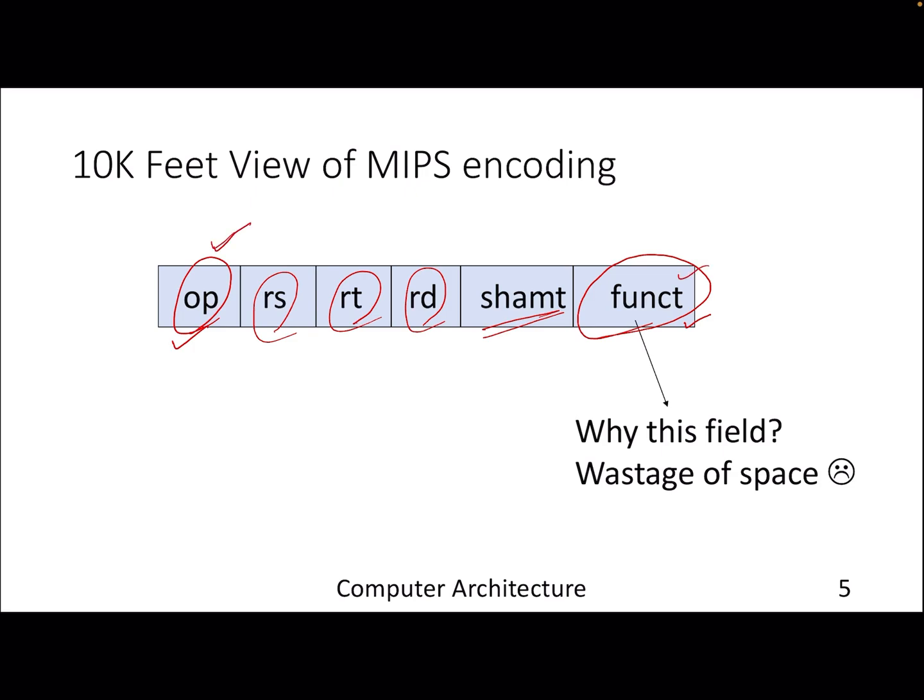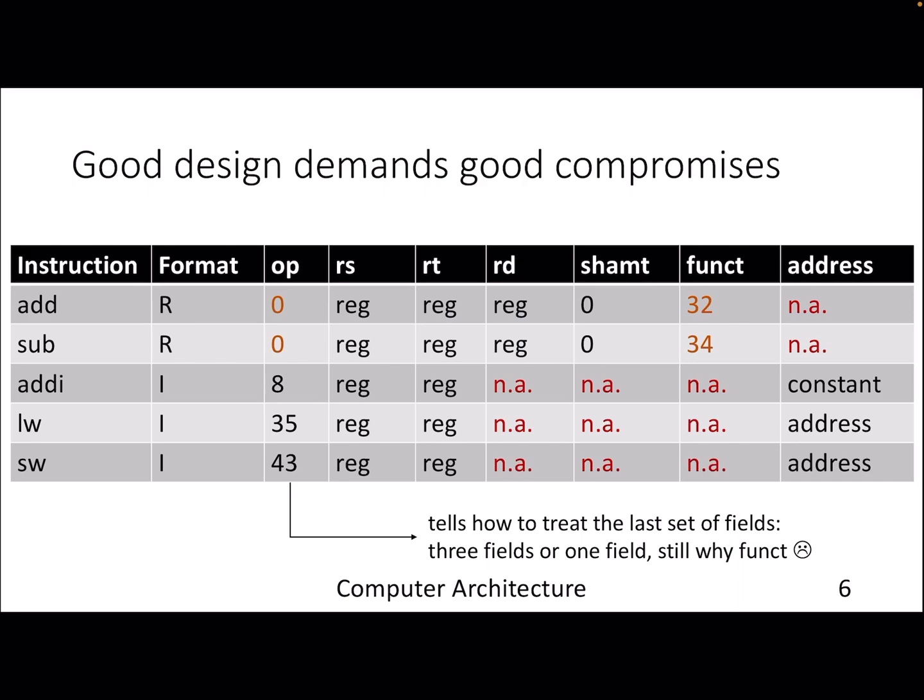Let's look at a few instructions that we have seen so far. In this table, I am showing various kinds of instructions, some of them are register type which use registers for performing operations. One thing you can see here is the opcode is same for both addition and subtraction, but the functionality field has two different values, which means when the processor receives this 32-bit instruction, the opcode for both addition and subtraction will be same, but these lower bits which denote the functionality will tell you whether to do addition or subtraction. Of course, there is no shift amount here.